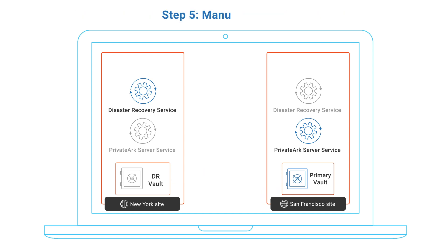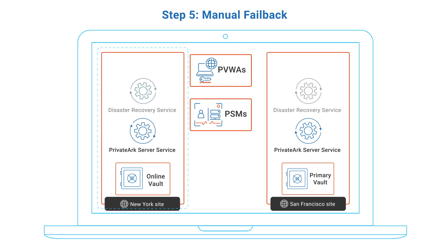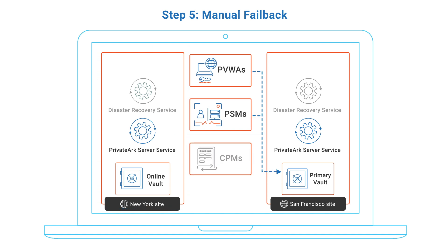In the fifth step, we will perform a manual failback in New York. By the end of the process, the Private ARK server service is started on the New York vault and the DR service is stopped. Note that our PVWAs and PSMs are still connected to the vault in San Francisco, while the CPM remains offline for the entire duration of the exercise.